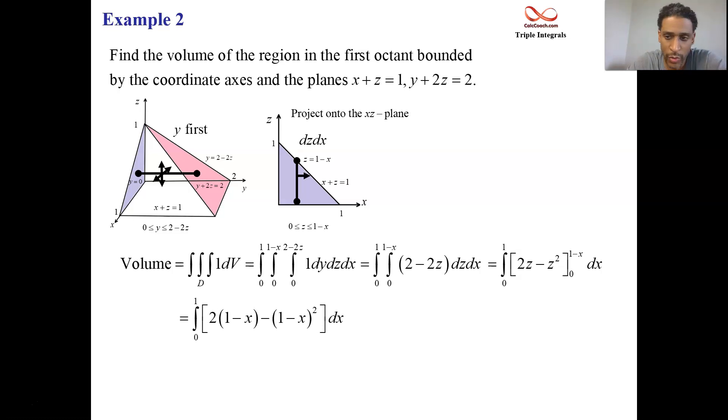Distribute the two as well. And you end up combining. 2 minus 1 is a 1. Negative 2x plus a 2x. Well, that's nice. They cancel. And then minus x squared. 1 minus x squared from 0 to 1. X minus x cubed over 3. 1 minus 1 third. The answer is 2 thirds.